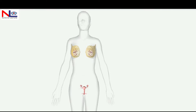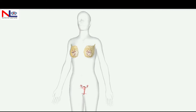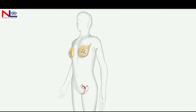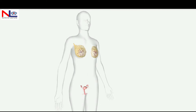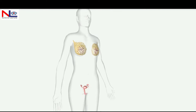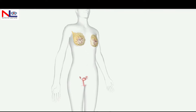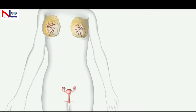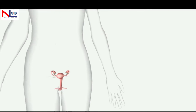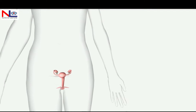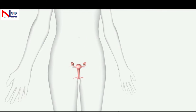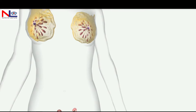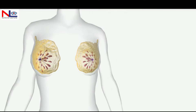I will talk about the female reproductive organ. As you can see, it is divided into three parts: external genital regions, internal genital regions, and the mammary glands.